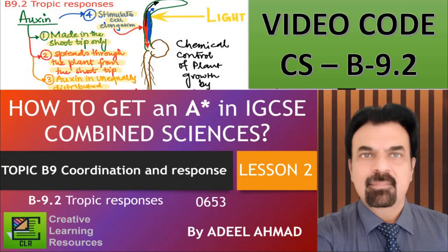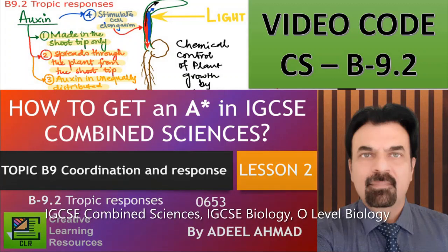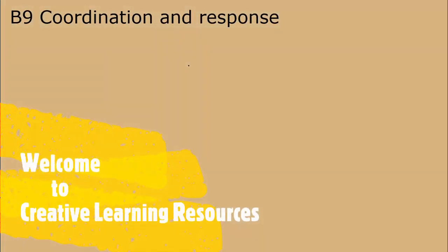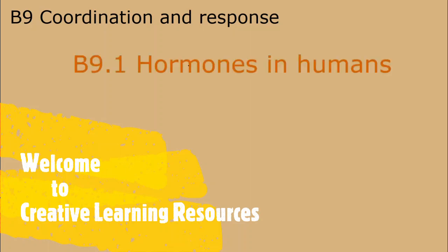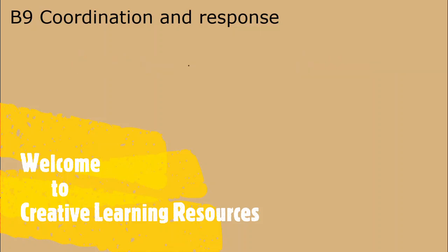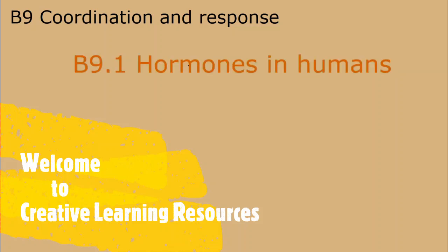Welcome to Creative Learning Resources. This is another video on how to get an A-star in IGCSE Combined Sciences. This is also very helpful for students of IGCSE Biology Subject Code 0610 and O-level students as well. This is the second video on B9 Coordination and Responses for Combined Sciences Subject Code 0653. The first video is on B9.1 Hormones in Humans — check out that video in the playlist of Combined Sciences.